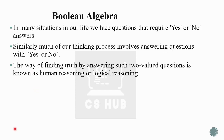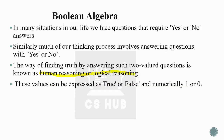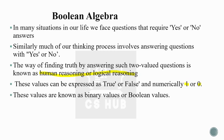Reasoning is a way of finding the truth by answering two-valued questions. These values can be expressed as true or false. Numerically, we represent true by 1 and false by 0. These values are known as binary values or Boolean values. If we study Boolean algebraic concepts, we can learn various terms.